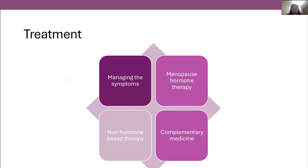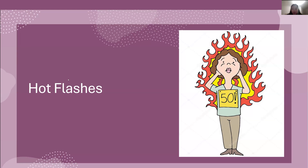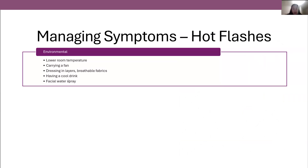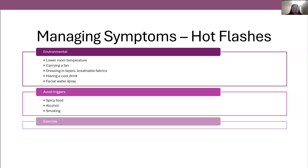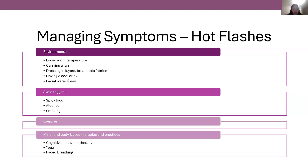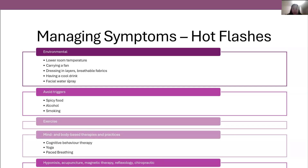Now, how do we manage the symptoms of menopause? Hot flushes arise from the alteration to the thermoregulatory center. Things we can do to manage them include adjusting the room temperature, carrying a fan, having a cool drink on hand, dressing in layers that can be easily removed, and wearing breathable fabrics. There are some identifiable triggers such as spicy foods, alcohol, and smoking. Exercise is beneficial, and cognitive practices such as yoga, breathing, and cognitive behavioral therapy can be employed. There is limited evidence for hypnosis and not much good evidence for acupuncture, magnetic therapy, reflexology, or chiropractic practices.